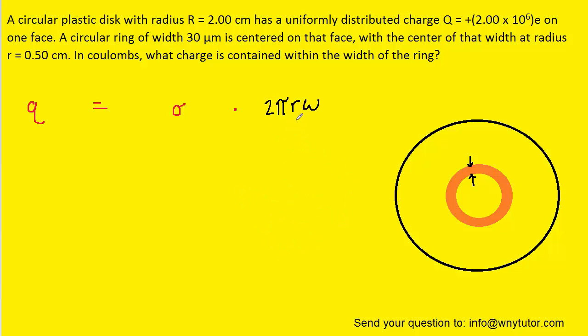Just keep in mind that in the expression 2πrW, W again is the width of that circular ring, and then r would be the radius of that circular ring, which is 0.5 centimeters. Now all we need to do is come up with the expression for the surface charge density.